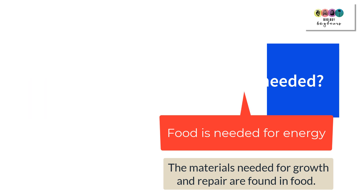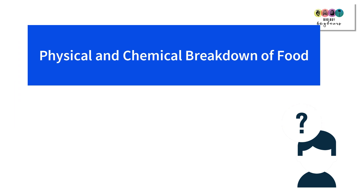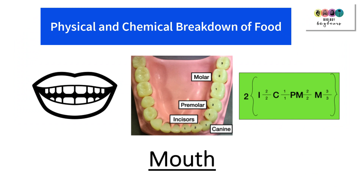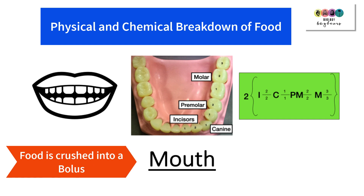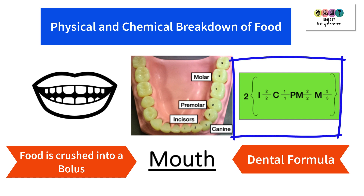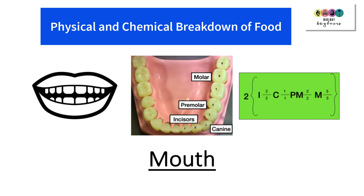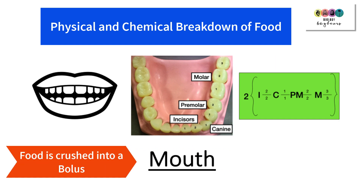Physical breakdown of food starts at your mouth — it's the crushing and grinding action of your teeth, turning the food with the help of your tongue into a ball known as a bolus. You have particular types of teeth described by your dental formula, covered in a separate video. Your teeth and tongue crush and grind food into a bolus. Another name for your mouth is the oral cavity or the buccal cavity.